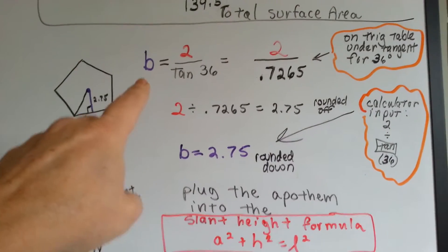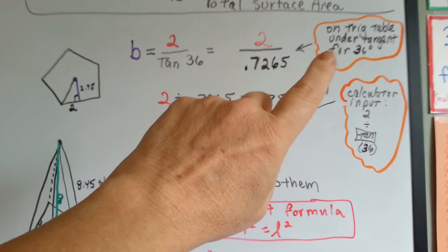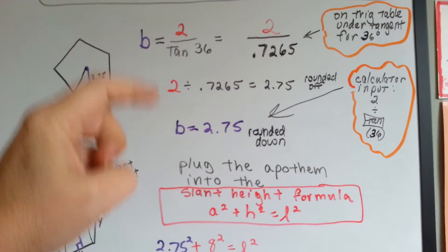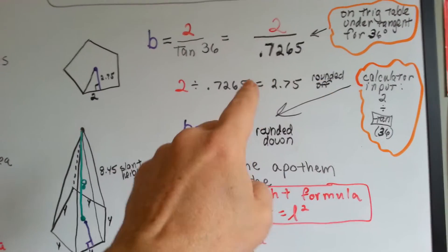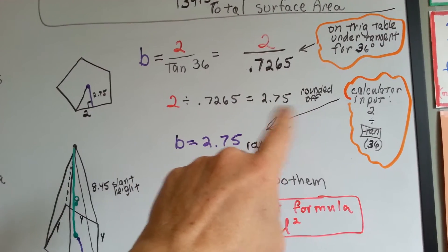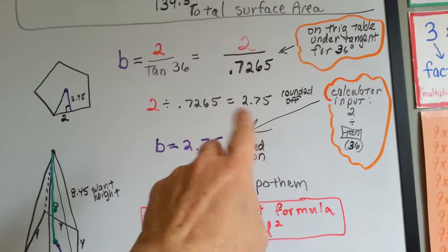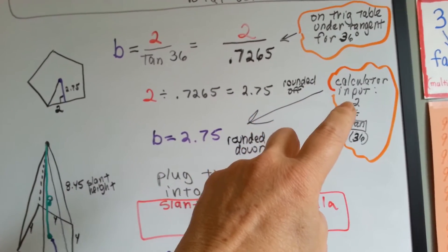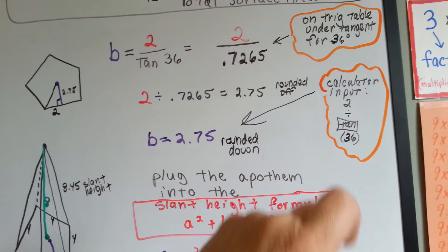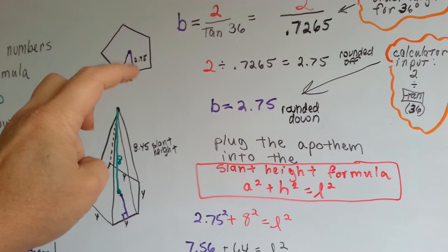So now we've got B is equal to 2 over tangent 36. There's a couple of ways we can do this. If you don't have a scientific calculator, go to the back of your book or online on a trig table, and under the tangent column for 36 degrees, it'll be tangent column, and then the degrees will be on this side, and just look and see where they meet, and it'll say 0.7265. We divide 2 by 0.7265, and we get a rounded off 2.75. If you have a scientific calculator, just put in 2 for the opposite side. Hit divide, hit the tangent button, and type in 36, and you'll get the 2.75. Now, now we have our apothem. We know that this is 2.75.